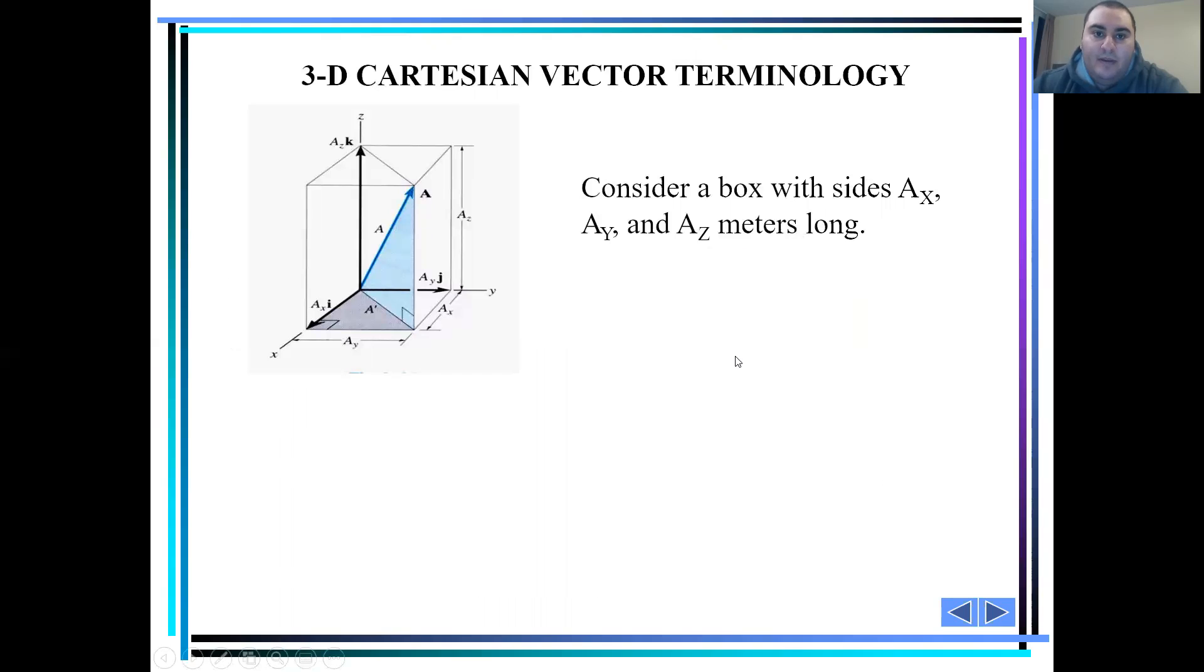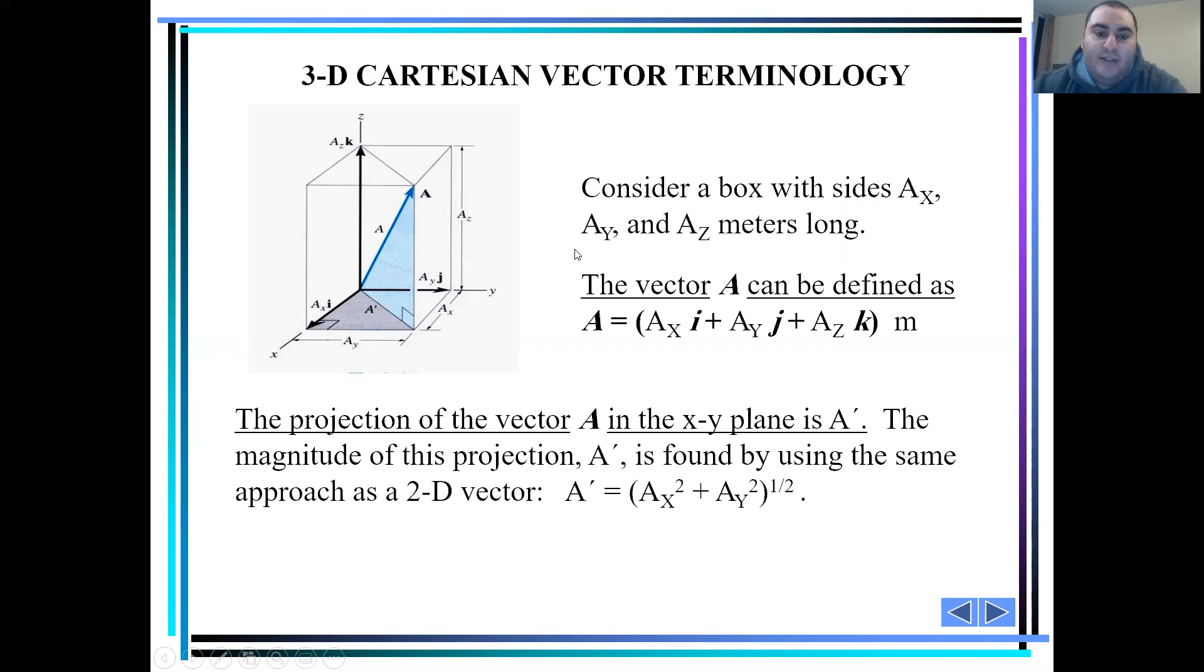So let's get to know some 3D Cartesian vector terminologies. Consider a box with the size ax, ay and az meters long. The vector A can be defined as ax*i plus ay*j plus az*k meters. The projection of vector A on the xy plane is called A hat and the magnitude of this projection A hat on the xy plane.